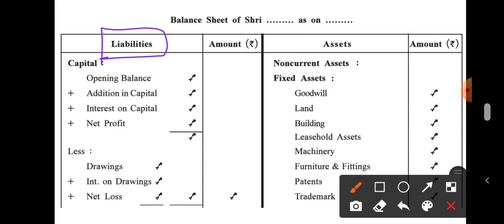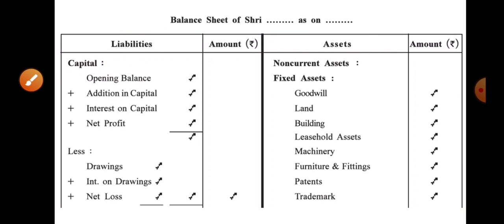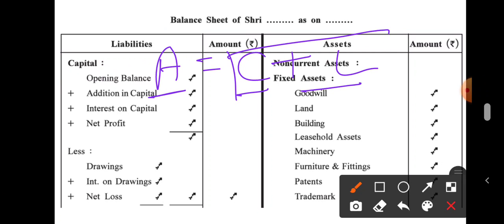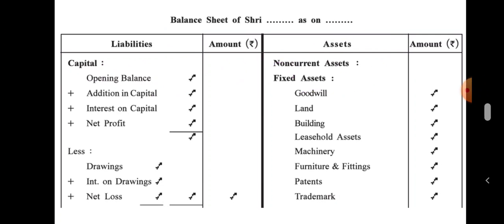Liabilities are of two types: internal liability and external liability. Internal liability is called capital. This is how the balance sheet fulfills the concept of A = C + L, meaning Asset is equal to Capital plus Liability.